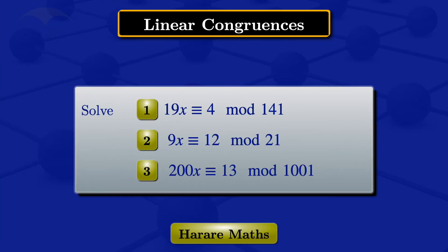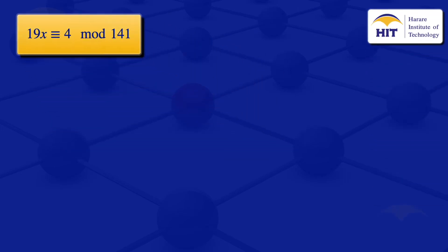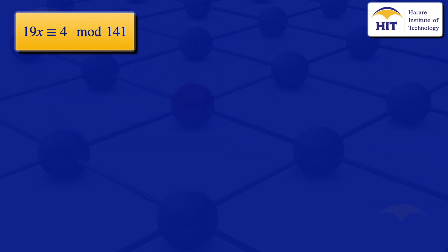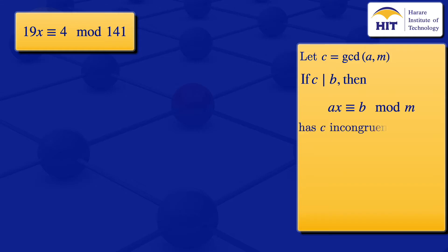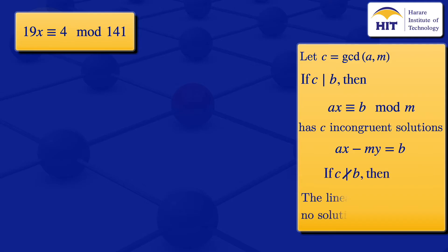In this video I'm going to solve three linear congruences. Let c be the greatest common divisor of a and m. If c divides b, then the linear congruence ax ≡ b mod m has c incongruent solutions, obtained by solving the equation ax minus my equals b. If c does not divide b, then the linear congruence has no solutions.